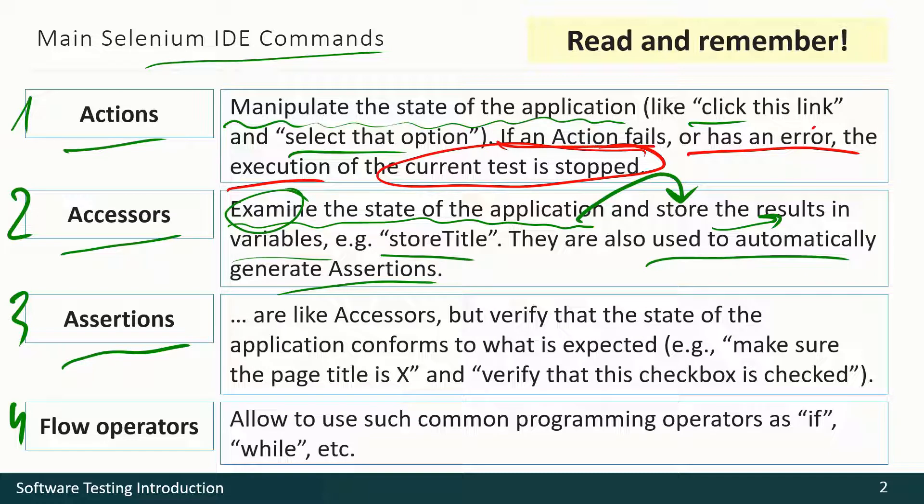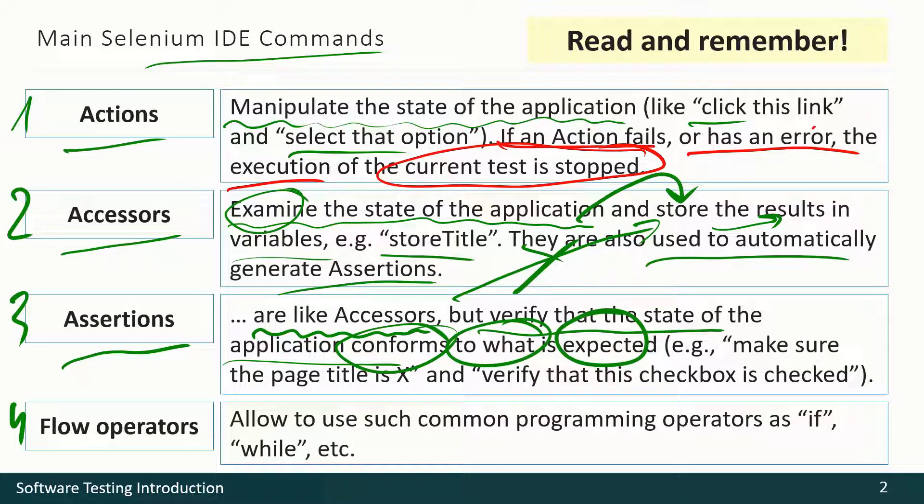Assertions also access something. They are really like accessors, but they do not store. They only verify the state of the application, check that it conforms to what is expected. Like we may check that the title has some value, the checkbox is checked or something like that.